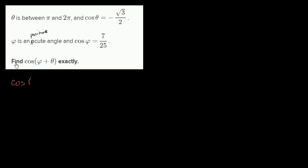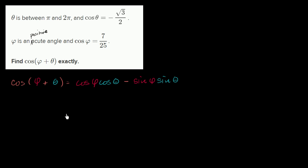Let's just write out the angle addition formula. It tells us that cosine of phi plus theta is equal to the product of the cosines of both angles — cosine phi times cosine theta — minus the product of the sines of both angles, so sine of phi times sine of theta. We already know some of this: cosine of phi is 7/25, and cosine of theta is negative square root of 3 over 2.